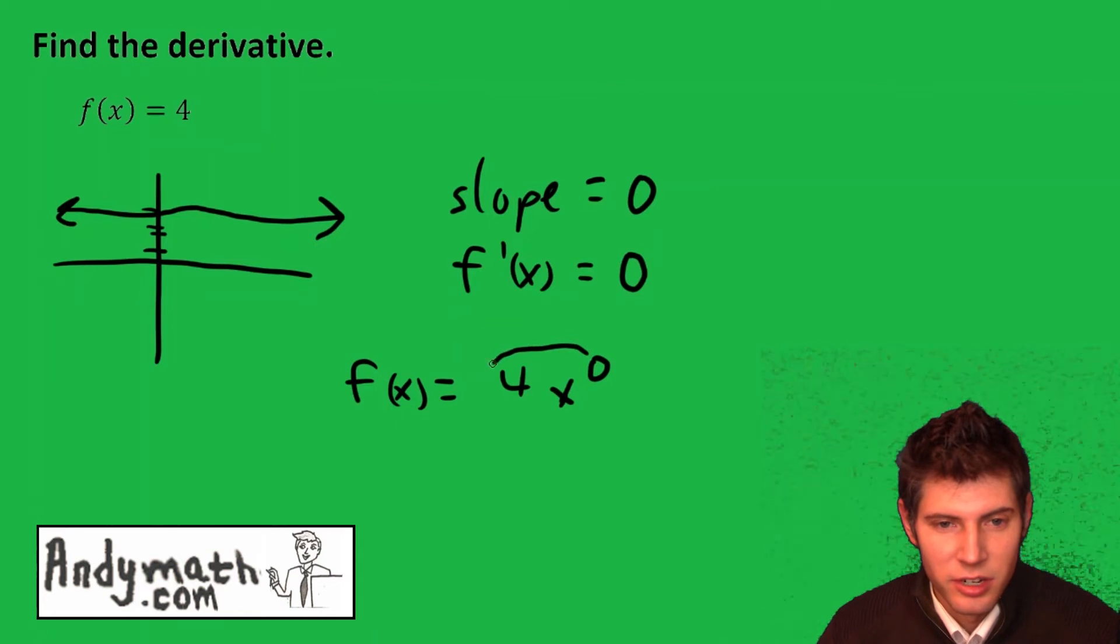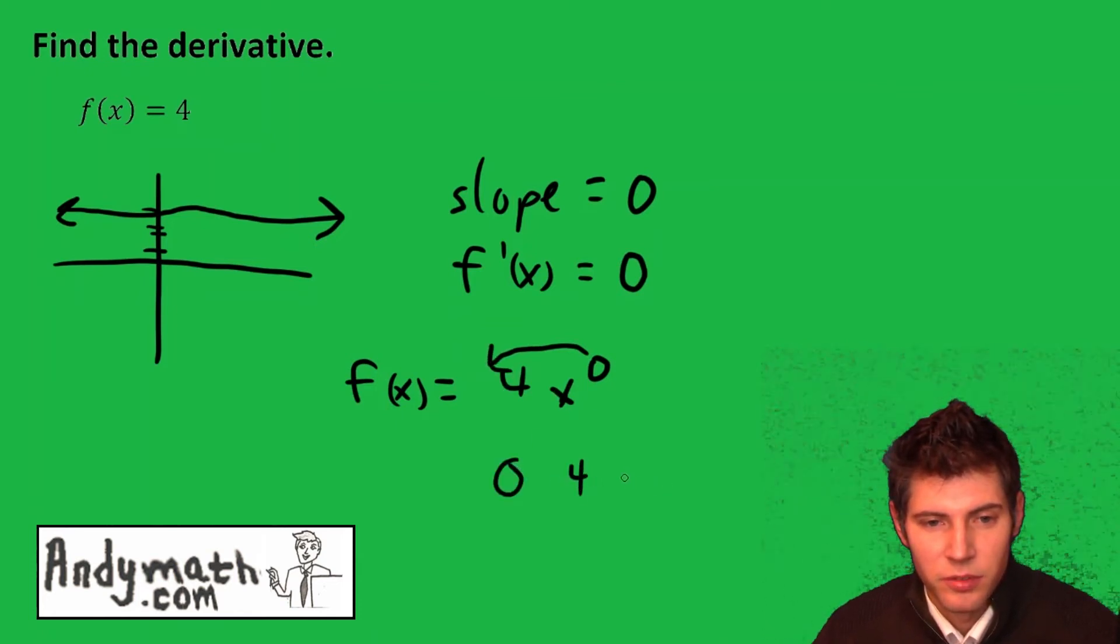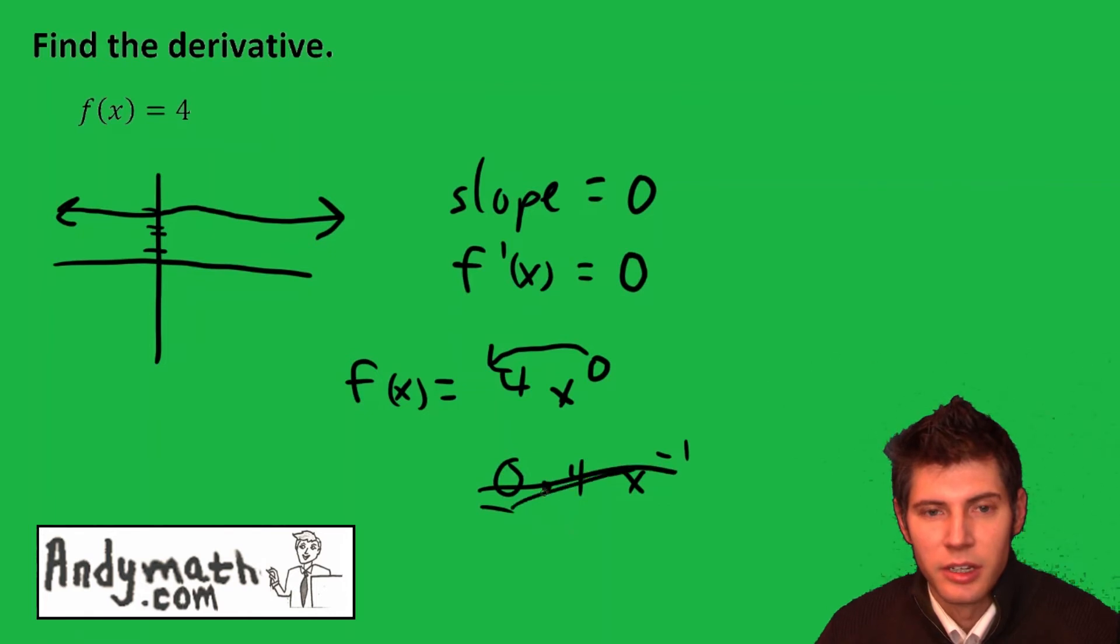If we bring the 0 down in front, it's 0 times 4x, and subtract 1 from that, we get negative 1. But it doesn't matter because it's 0 anyway. 0 times anything would be gone, so you just get 0.